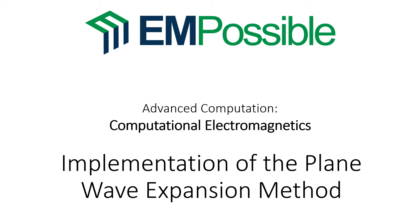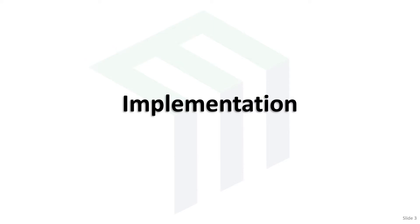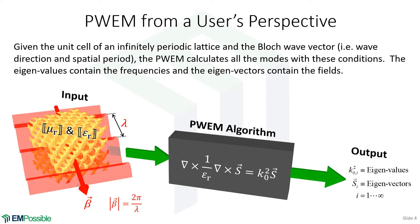We've derived a lot of equations for the plane wave expansion method, and in this lecture we'll talk about how to actually use those to calculate photonic band diagrams. Let's wrap a black box around our plane wave expansion method and think of it like a magic eight ball — the inputs are a description of the lattice, our convolution matrices, and a Bloch wave vector. We're asking: in this lattice, what goes in this direction with this wavelength?